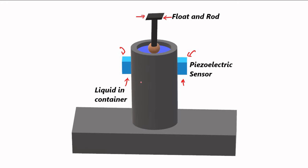For diagrammatic purposes, the float rod is shown as very long, but generally it has a negligible length. The position where the piezoelectric sensor is triggered gives us the level of the liquid.